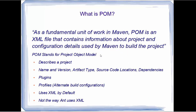Maven uses the concept of POM. POM is a fundamental unit of work in Maven — it's an XML file that contains information about the project and configuration details used by Maven to build the project. This information describes the project in full and includes the name, version, artifact type, source code limitations or dependencies of a project. It also retains the plugin information and profiles.